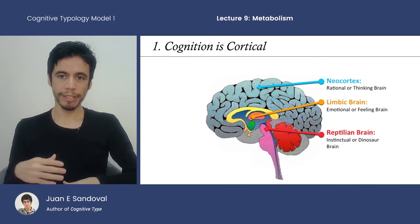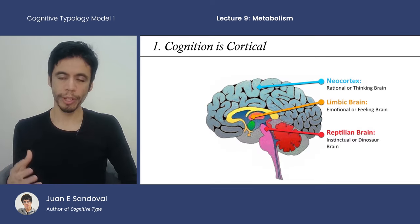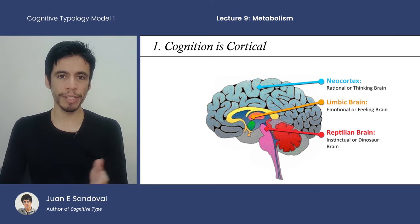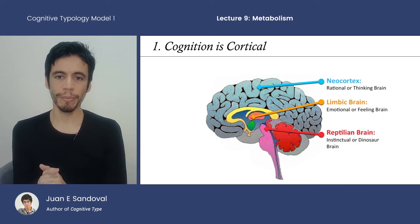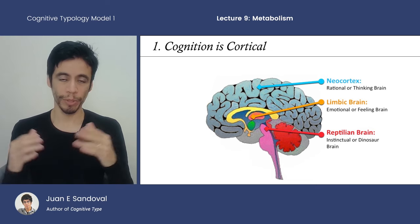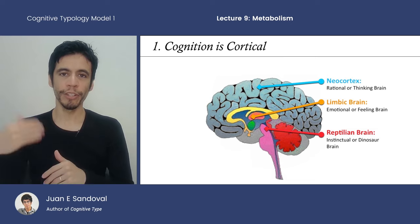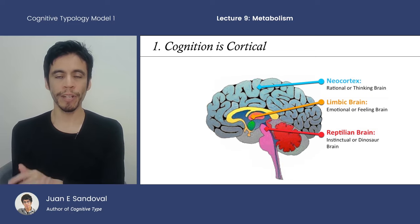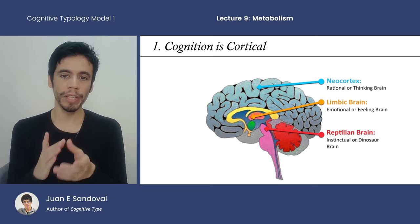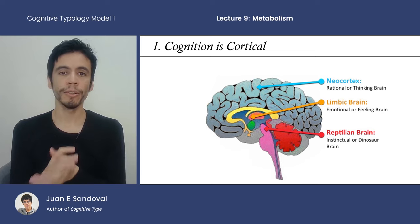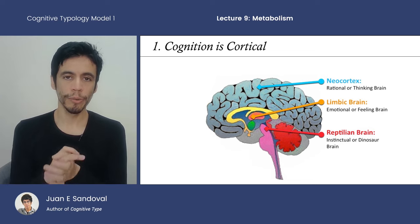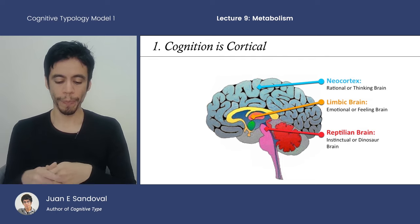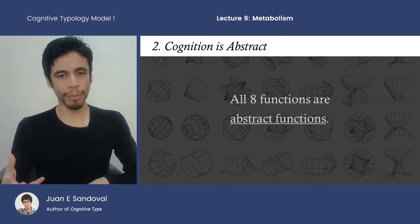Cognition is cortical — it does not include the cerebellum. Using the classic model of the brain: the neocortex, the limbic system, and the reptilian brain — everything in CT as far as metabolism goes is happening in the neocortex. The neocortex deals with reasoning, judgment, perception, attention, abstract thought, and working memory. The second point is that cognition is abstract.